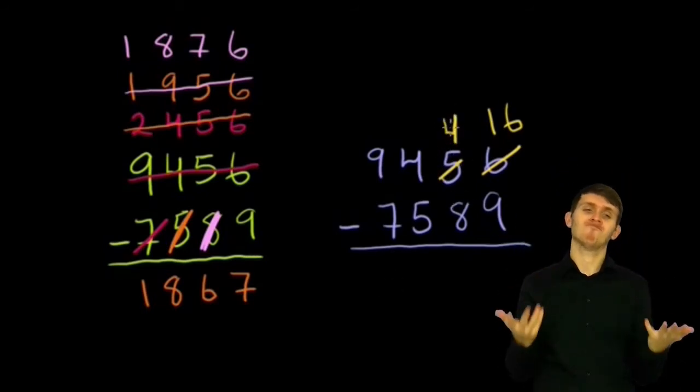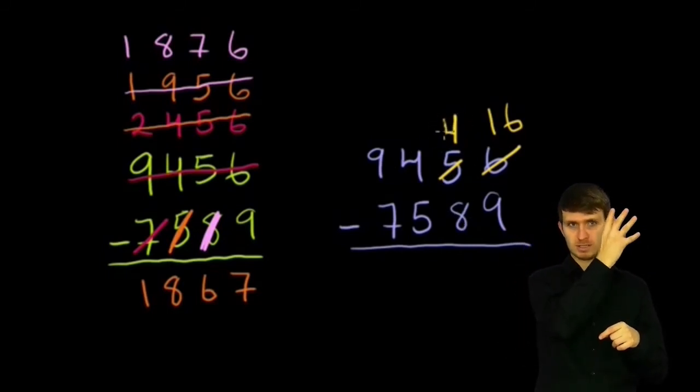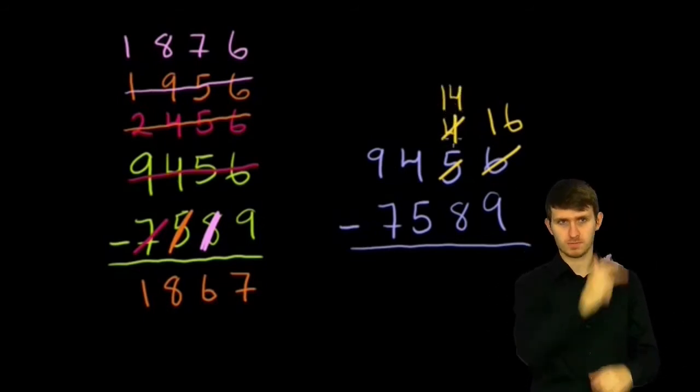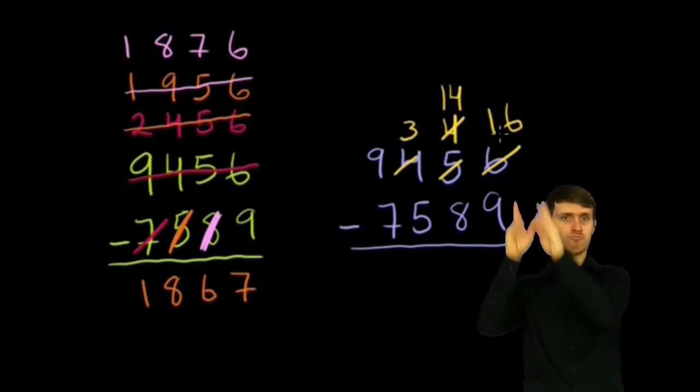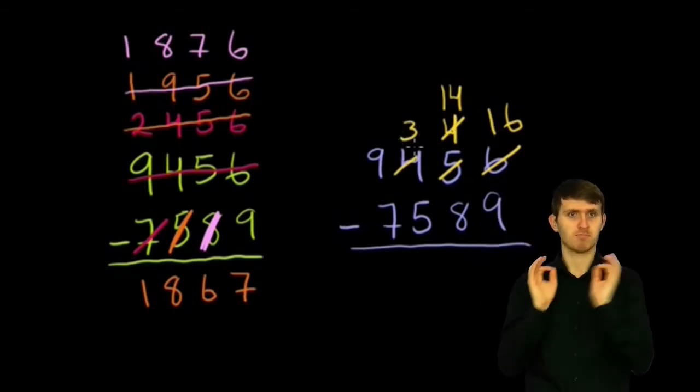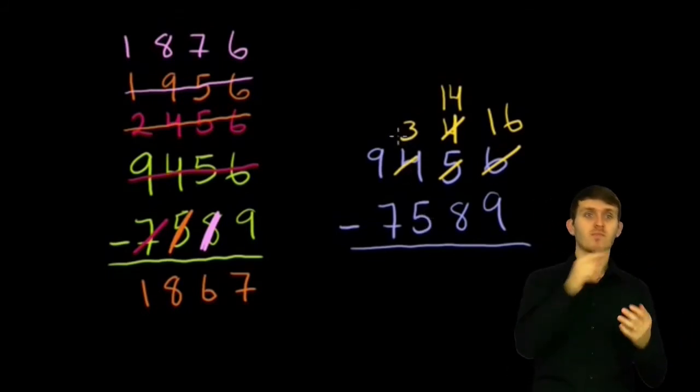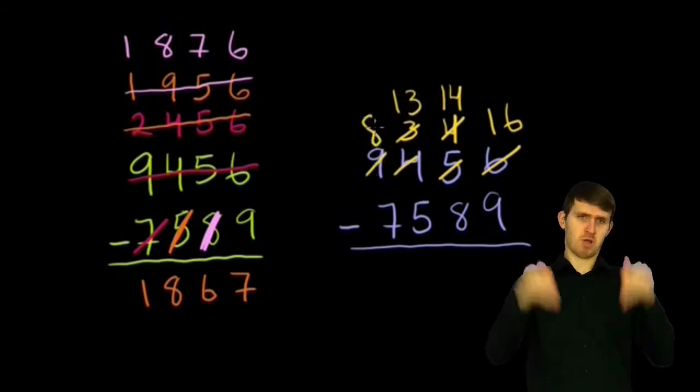Then I go to the tens place. 4 needs to be larger than 8. So let me borrow 1 from the hundreds place. So then that 4 becomes a 14, right? Or 14 tens, because we're in the tens place. And then this 4 becomes a 3. Now, these two columns or places look good, but right here I have a 3, which is less than a 5. Not cool, so I have to borrow again. That 3 becomes a 13, and then that 9 becomes an 8. And now I'm ready to subtract.